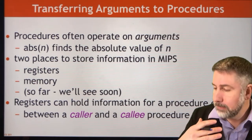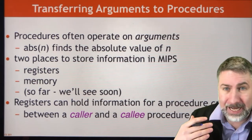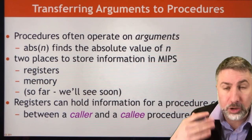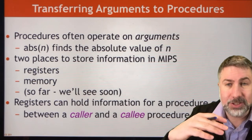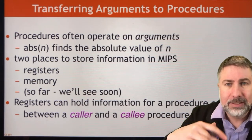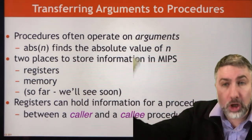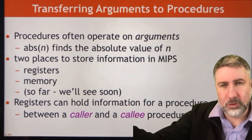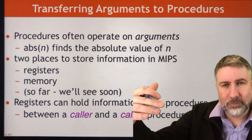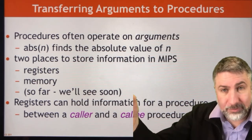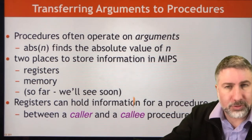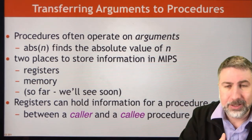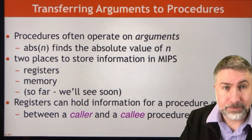We're going to use these registers to pass information from what we call the caller. The caller contains the jump and link to the callee, which is the subroutine or piece of code that will receive the information from the caller, produce some new result, and pass it back to the caller.